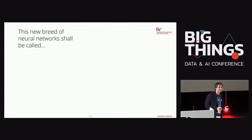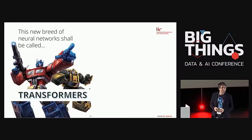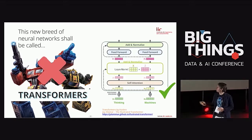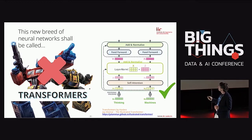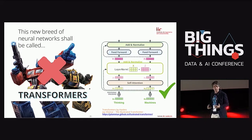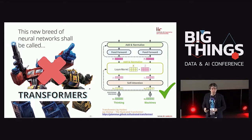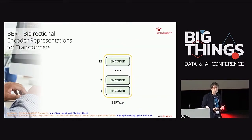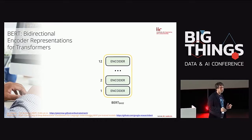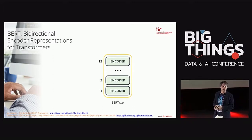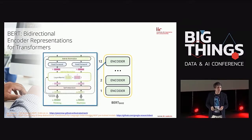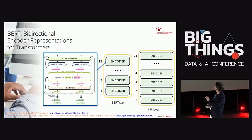Using these self-attention layers, we can build what are called transformers — not the robots, but neural network blocks stacking self-attention layers. Each transformer block takes one embedding per word, mixes them, and outputs the same number of embeddings but now with context. Stacking many of these blocks gives us BERT: Bidirectional Encoder Representations from Transformers. The base BERT has 12 transformer layers; there's also a larger version with 24 layers.